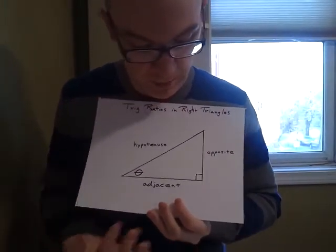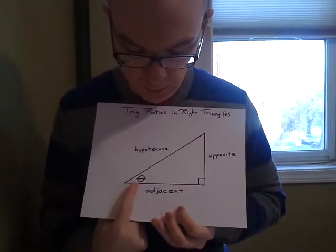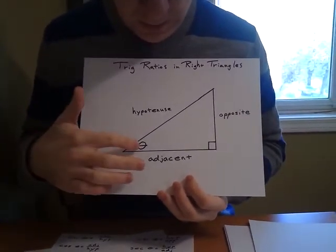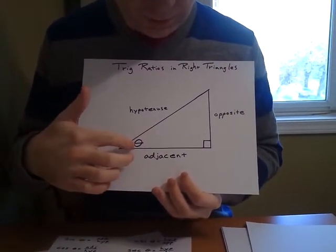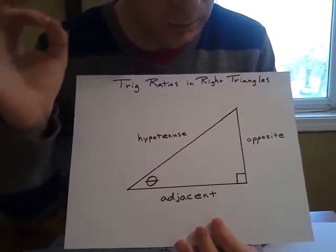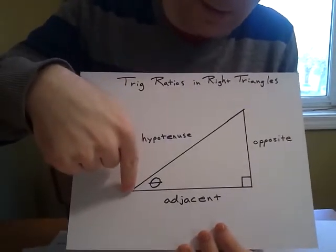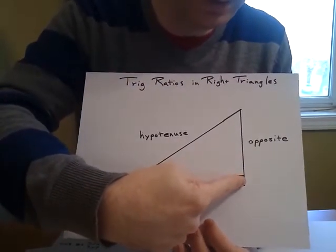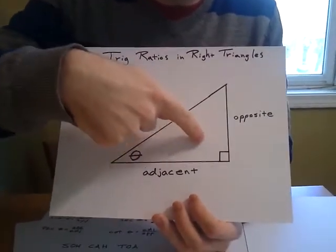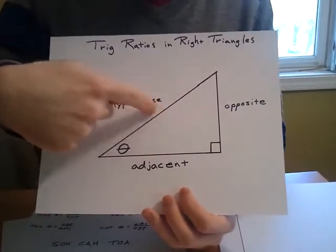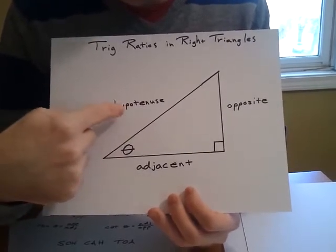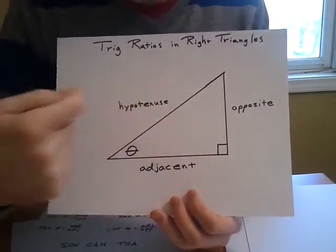As you can see right here, we have a right triangle with one particular angle marked theta. This theta will determine what we can call two of our sides. Now, with any right triangle, the side that is across from your right angle, so the right angle is not formed by this side, it is directly opposite, it's directly across from here. This is your hypotenuse. This one is unchanging. Your hypotenuse will always be the side that is across from your right angle.